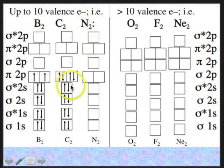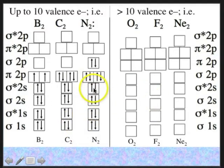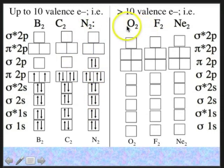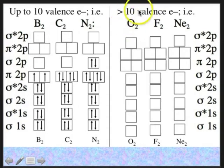For nitrogen, N2: nitrogen is element 7, each has 7 electrons, giving 14 total. Nitrogen has 5 valence electrons, so two nitrogens give 10 valence electrons — we're at the end of this first energy pattern. As soon as we go to dioxygen O2, we have more than 10 valence electrons: oxygen has a valence number of 6, two of them is 12, which is greater than 10. So for O2, we use the second energy pattern.